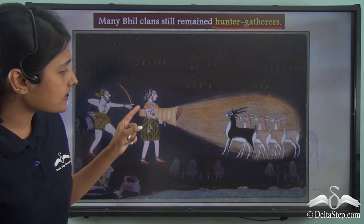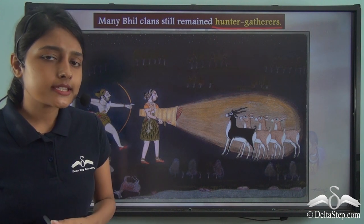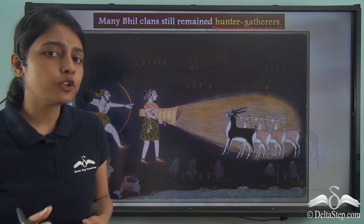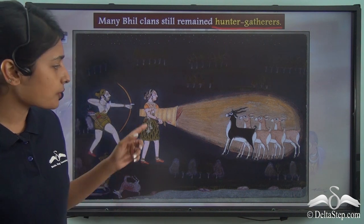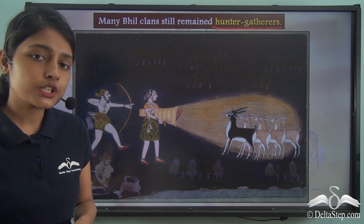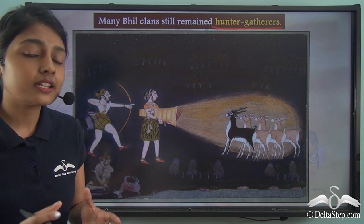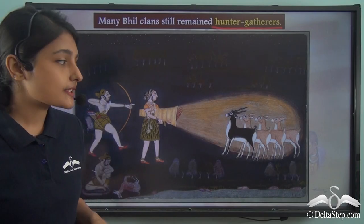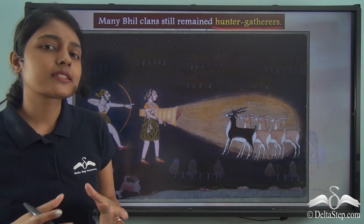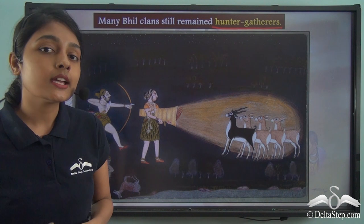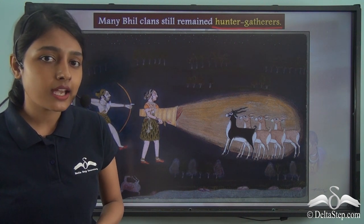An illustration shows Bhil clan members hunting at night. The torch shown is figurative or symbolic of the night time — these hunter-gatherer Bhil members used something like a torch to hunt deer and other animals even in the middle of the night, highlighting how the Bhil clans did not undergo evolution in a uniform way.